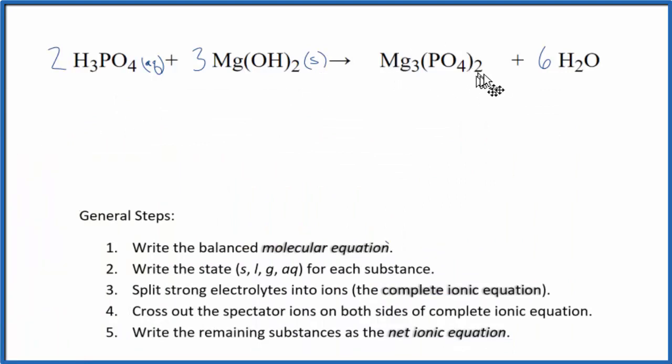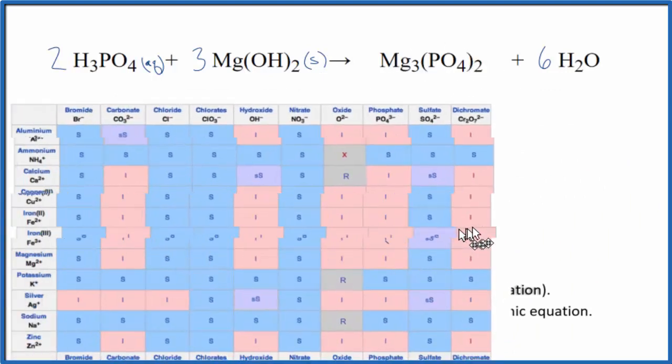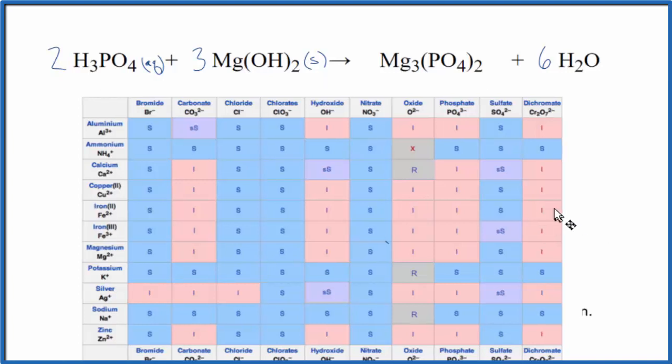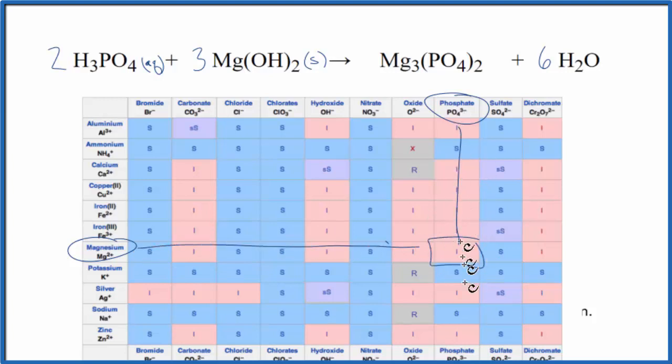For magnesium phosphate, these are often insoluble, but let's get our table back up here and check to be sure. We have magnesium, and then phosphate, and we go across, and, yep, it's insoluble. You can see most of them are insoluble, except some of the group 1 elements. So, that's going to be a solid as well. Then, water, that's a liquid. So, we have our states.